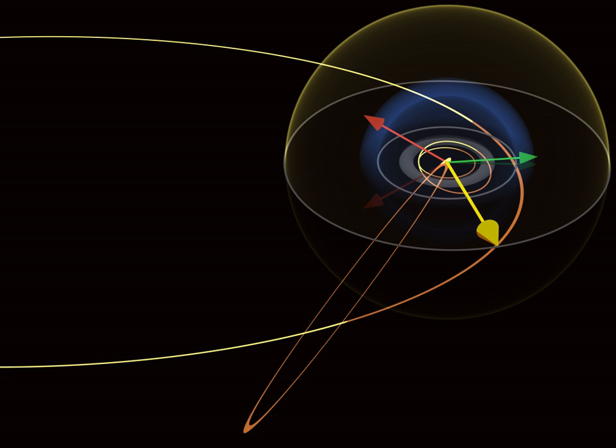Voyager 2 is still active. It is not headed toward any particular star, although in roughly 40,000 years it should pass 1.7 light-years from the star Ross 248. If undisturbed for 296,000 years, it should pass by the star Sirius at a distance of 4.3 light-years.